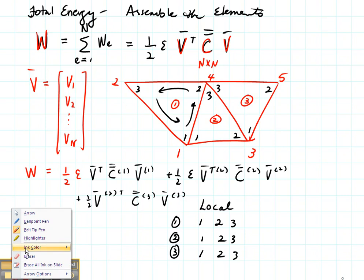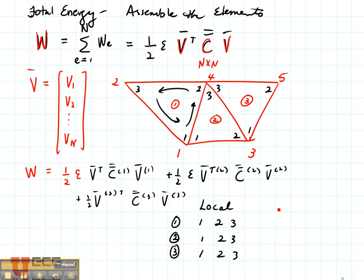Well, there are local nodes. Now let's consider what they're going to be for global nodes. So let's look at element number one. Local node one is equal to global node one. Local node two is equal to global node four. And local node three is equal to global node two.